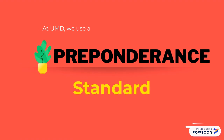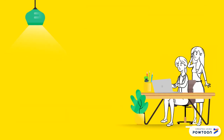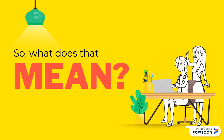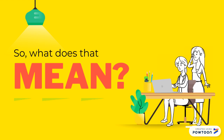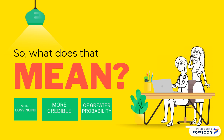At UMD, we use a preponderance standard for all student conduct decisions. When using the preponderance standard, you must determine that which is more convincing, more credible, and of greater weight or probability.